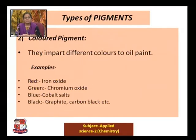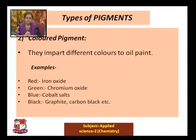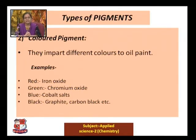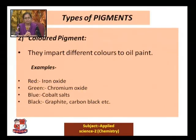Colored pigments give different colors to oil paints. For example, for red color we use salts of iron oxide; for green color we add salts of chromium oxide; for blue color we use cobalt salts; and for black color, graphite and carbon black act as colored pigments.